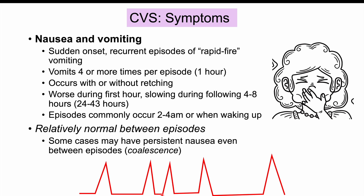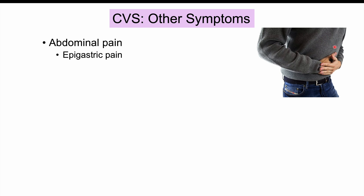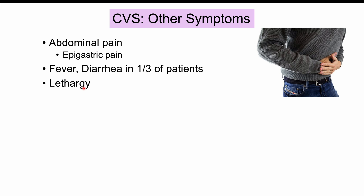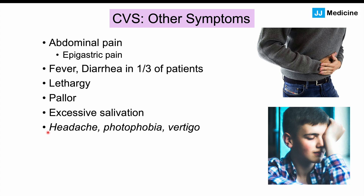There are other symptoms that can occur in CVS, including abdominal and epigastric pain, fever, and diarrhea in roughly a third of patients. Lethargy is common, and pallor may be present — possibly due to autonomic dysfunction. Excessive salivation occurs in roughly a quarter of patients. Some patients have neurological findings including headache, photophobia, and vertigo, which are reminiscent of migraine headaches.